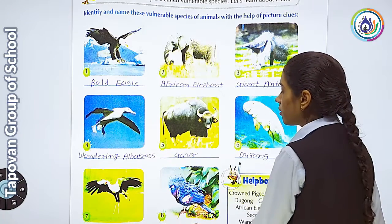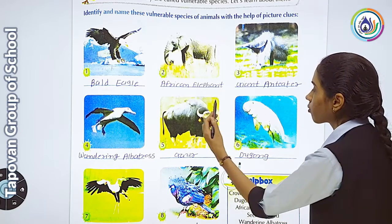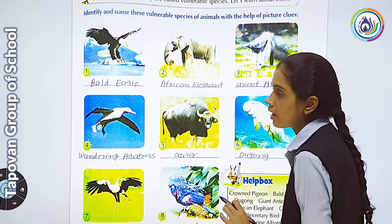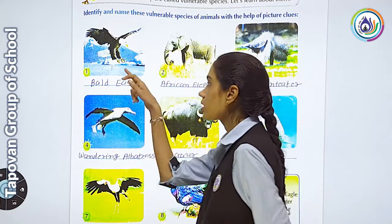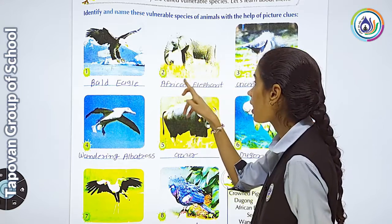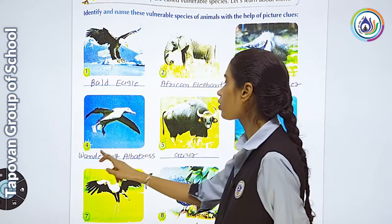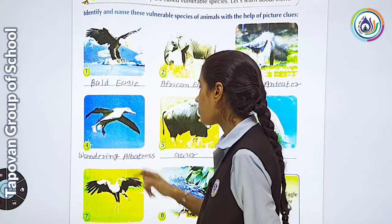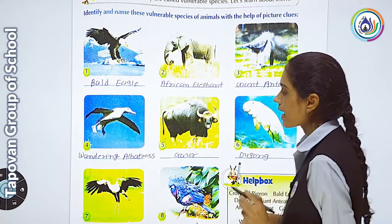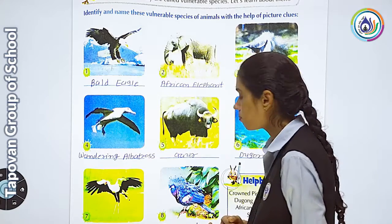You can see the animal name in the word box and fill it out in the matching picture. So: first picture is Bald Eagle, second picture is African Elephant, third is Giant Anteater, fourth is Wandering Albatross, fifth is Dwar, sixth is Dodo, seventh is Secretary Bird, and eighth is Crowned Pigeon.